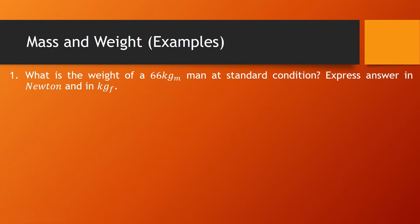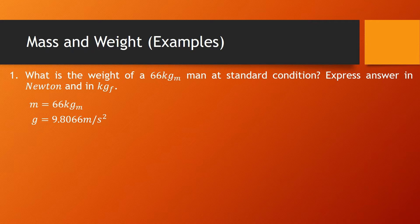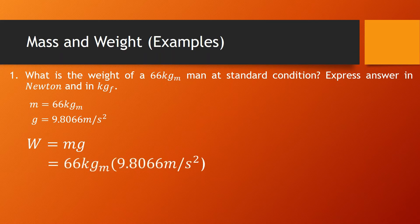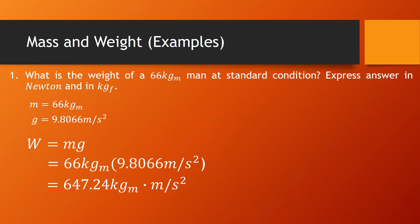For example, we have to find the weight of a 66 kilogram man at standard condition, expressed in newtons and in kilogram-force. The given is mass = 66 kg and gravitational acceleration g = 9.8066 m/s². Using the formula weight = mass × gravity, that is 66 × 9.8066, which equals 647.24 kilogram·meters per second squared.